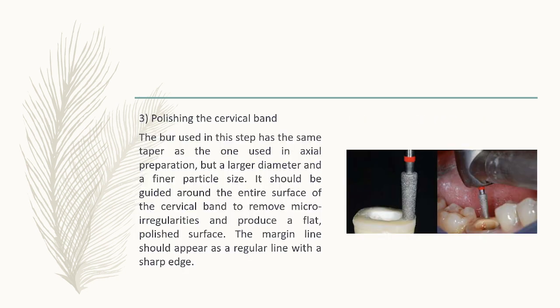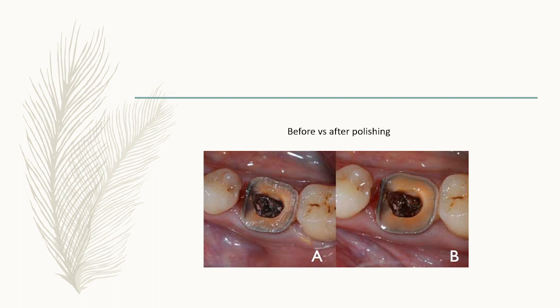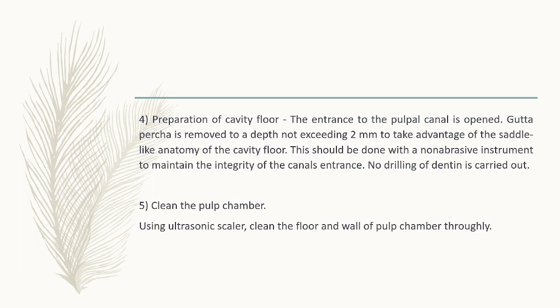For polishing the cervical band, a bur with the same curvature as the one used in axial preparation but with a larger diameter and finer particle size should be guided around the entire surface of the cervical band to remove micro-irregularities and produce a flat polished surface. The marginal line should appear as an irregular line with a sharp edge. For preparation of the cavity floor, the entrance to the pulp canal is opened, and gutta-percha is removed to a depth not exceeding 2 mm to take advantage of the saddle-like anatomy of the cavity floor, improving retention resistance. No drilling of dentin is carried out.